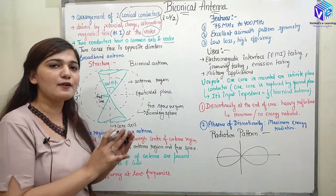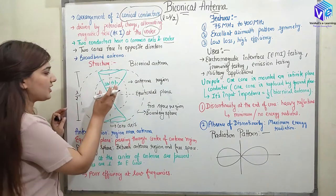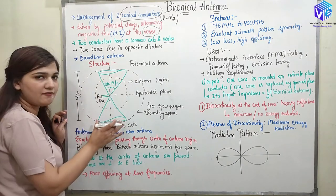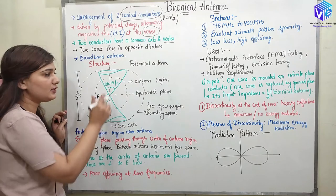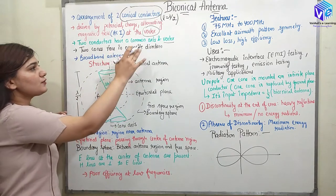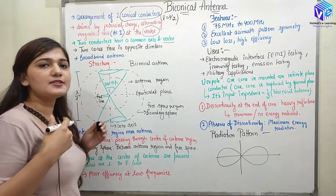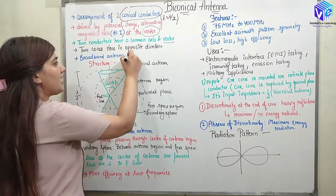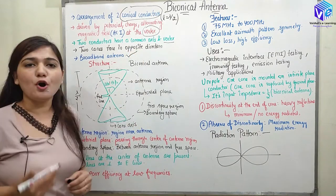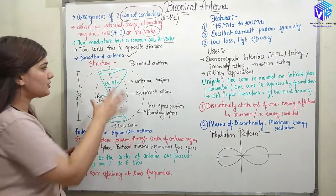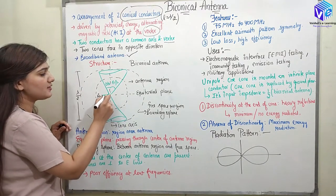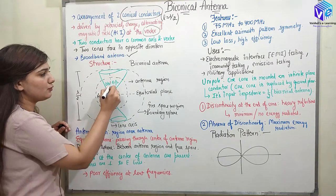The two conductors are facing in the opposite direction — exactly 180 degrees opposite to the first conical conductor. The second conical conductor is placed so that the cone axis is aligned. Here you can see we have the common feed line, this is the common vortex, this is the first cone, and this is the second cone.